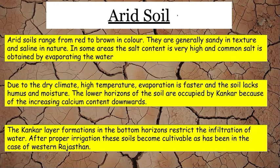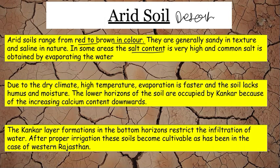Arid soil is also known as desert soil because it is found in desert regions. It ranges from red to brownish in color with a sandy texture. The salt content is quite high, and common salt can be obtained by evaporating the water. Lower horizons are occupied by kankar, where calcium concentration is very high. Kankar formation in the bottom horizon restricts infiltration of water. Arid soil is found in western Rajasthan.